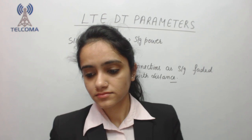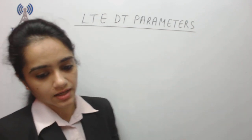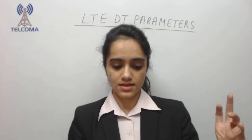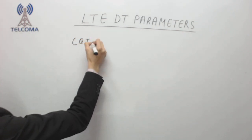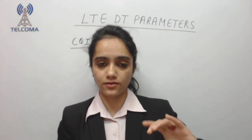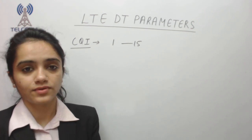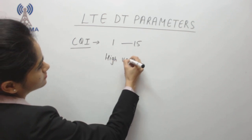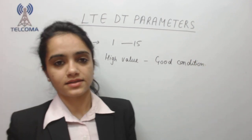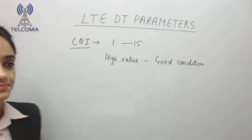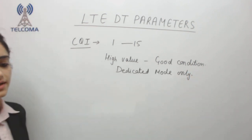These are the LTE drive test parameters we check whenever performing a test: RSSI, RSRP, RSRQ, and SINR. Next we have CQI — Channel Quality Index — which has a value from 1 to 15. A high value represents good conditions: CQI of 15 means good condition. CQI is measured in dedicated mode only.